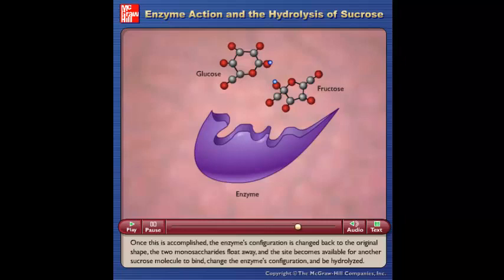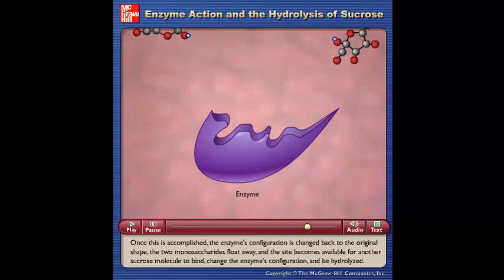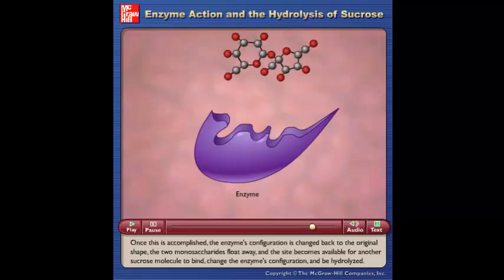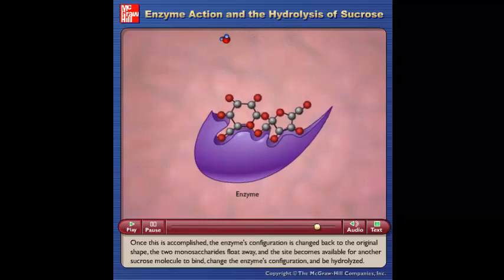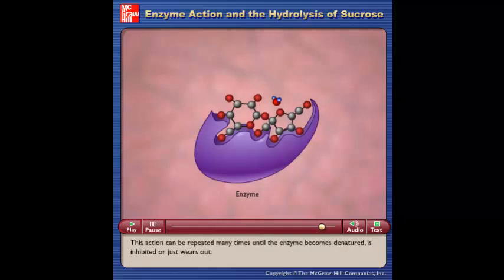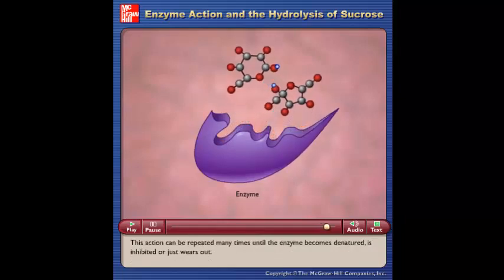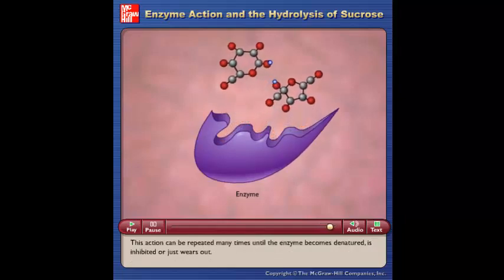Once this is accomplished, the enzyme's configuration is changed back to the original shape. The two monosaccharides float away and the site becomes available for another sucrose molecule to bind, change the enzyme's configuration, and be hydrolyzed. This action can be repeated many times until the enzyme becomes denatured, is inhibited, or just wears out.